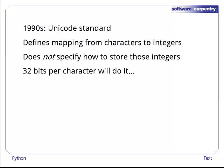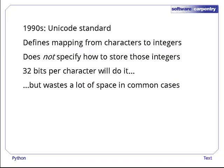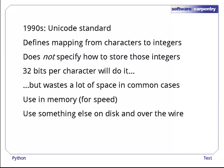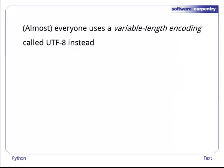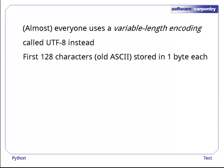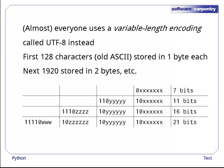The simplest choice would be to switch from using an 8-bit byte per character to using a 32-bit integer, but that would waste a lot of space for alphabetic languages like English, Estonian, and Brazilian Portuguese. Despite this, 32 bits per character is actually used in memory when access speed is important. But most programs and programmers use something else when saving data to a file or sending it over the Internet — almost always an encoding called UTF-8, which uses a variable number of bytes per character. For backward compatibility, the first 128 characters (the old ASCII character set) are stored in one byte each, the next 1920 characters in two bytes each, the next 61,000-odd in three bytes each, and so on. The way this works is shown in a table, but you don't have to know or care.